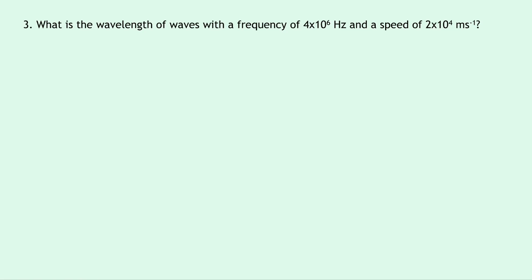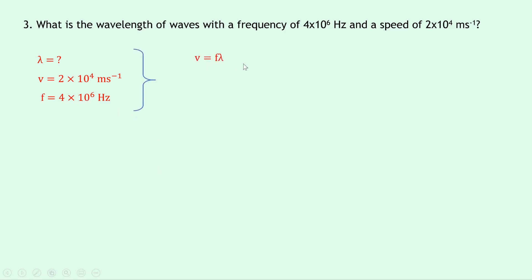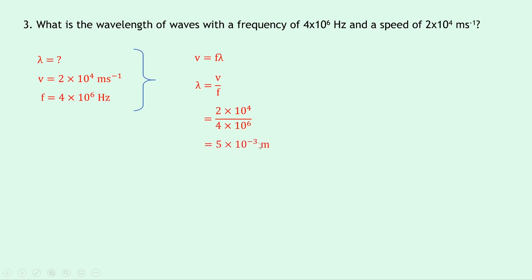Lastly, question three asks for the wavelength of waves with a frequency of 4 × 10⁶ hertz and a speed of 2 × 10⁴ meters per second — a bit of practice with scientific notation, but no prefixes used. We're trying to find the wavelength; speed is 2 × 10⁴ meters per second and frequency is 4 × 10⁶ hertz. Writing v = fλ and rearranging by dividing both sides by frequency gives λ = v/f. Substituting in: 2 × 10⁴ divided by 4 × 10⁶ gives 5 × 10⁻³ meters.